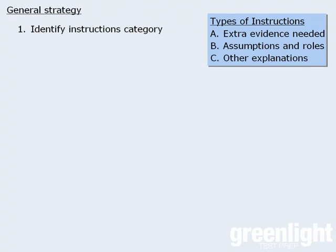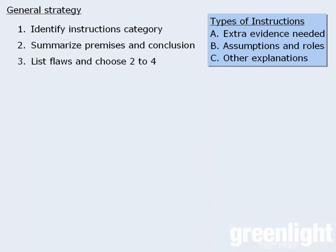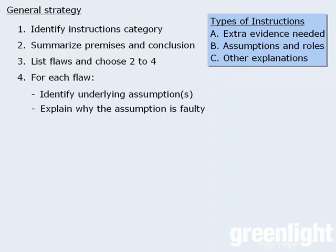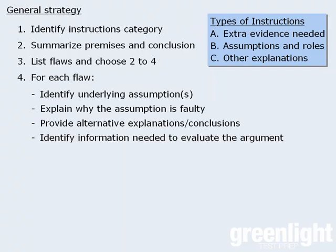Our strategy is as follows. The first step is to identify which category of instructions appears with the argument. The next step is to deconstruct the argument by identifying and summarizing the given premises and the conclusion. From here, once we have a good understanding of the argument, we'll start generating discussion points by listing flaws in the argument. Once we've identified three to five flaws, we'll choose two to four of them to work with. For each of these flaws, we'll identify the underlying assumption or assumptions, explain why the assumption is faulty, provide other possible explanations and/or conclusions, and identify what extra information is needed to evaluate the argument.